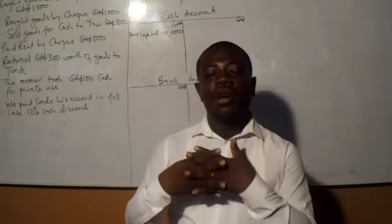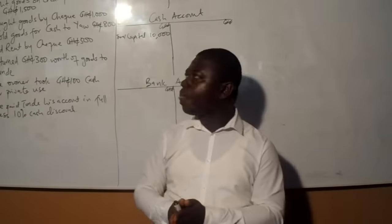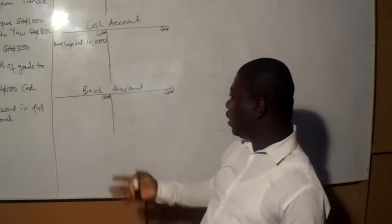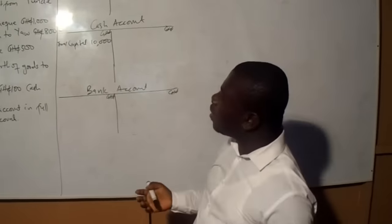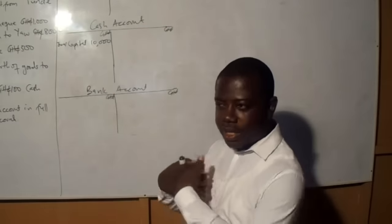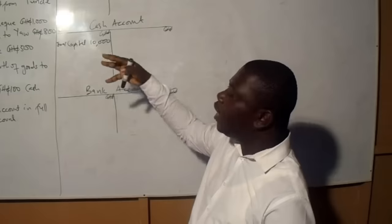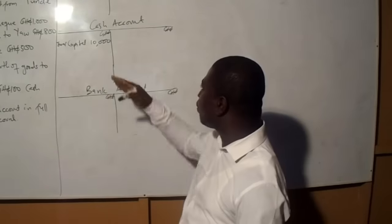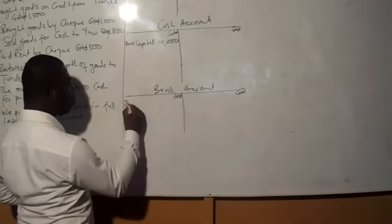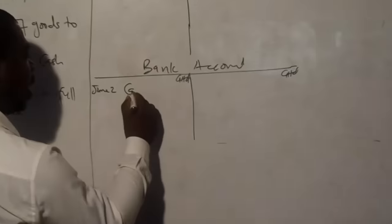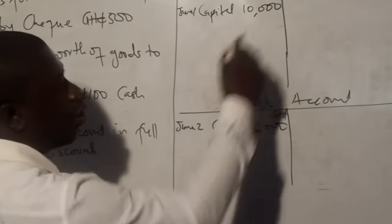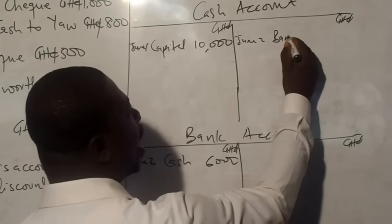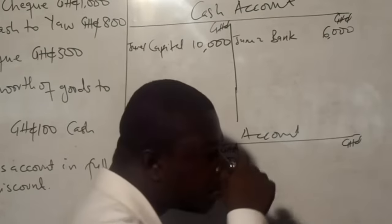The question we ask is: which one are we supposed to debit and which one are we supposed to credit? Cash account is a real account and bank account is also a real account — both are real. Cash at bank and cash in hand. Once we are taking money into the bank, cash is coming into the bank. Per the rule of real accounts, debit what comes in and credit what goes out. So on June 2, we debit bank account in the name of cash for 6,000. On the credit side of cash account, June 2, it will be in the name of bank, 6,000.